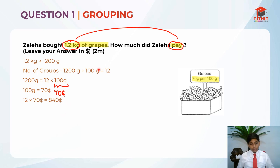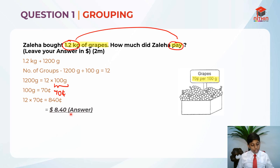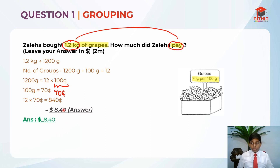This is not the answer yet, because they are asking us to leave our answer in dollars. We must convert 840 cents into dollars. To convert from cents to dollars, we divide by 100, and we get $8.40 — this is the answer. If you want to do the opposite, converting from dollars to cents, we multiply by 100. So $8.40 times 100 equals 840 cents.